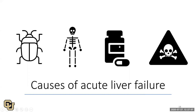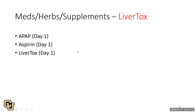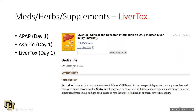For medications: think about acetaminophen on day one — it's a major cause of liver injury and failure. Also get aspirin levels, as combined toxicity from aspirin and acetaminophen is common, and ABG abnormalities in acute liver failure may manifest due to aspirin toxicity. Look up LiverTox for all the patient's medications on day one. For our patient's sertraline, it has been linked to rare instances of clinically apparent acute liver injury — but since she's taking it appropriately, it's unlikely to be the cause.